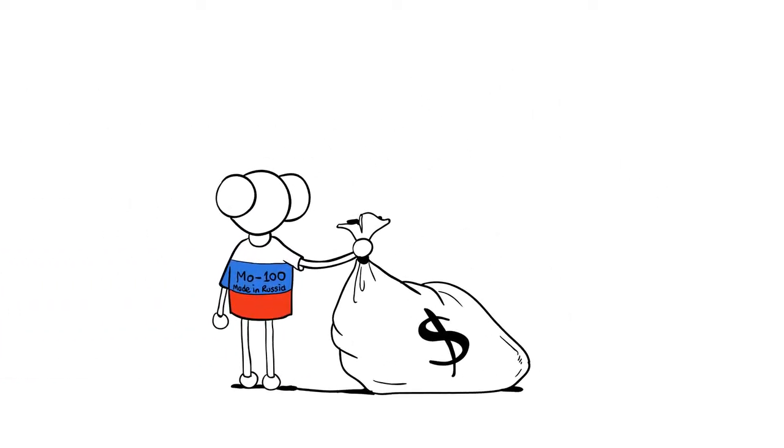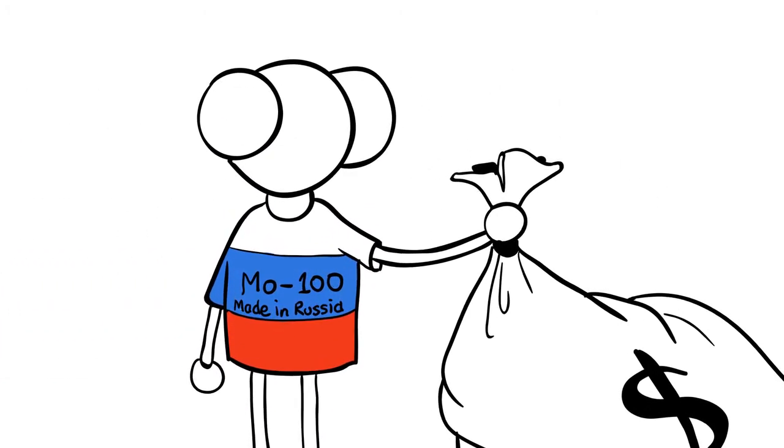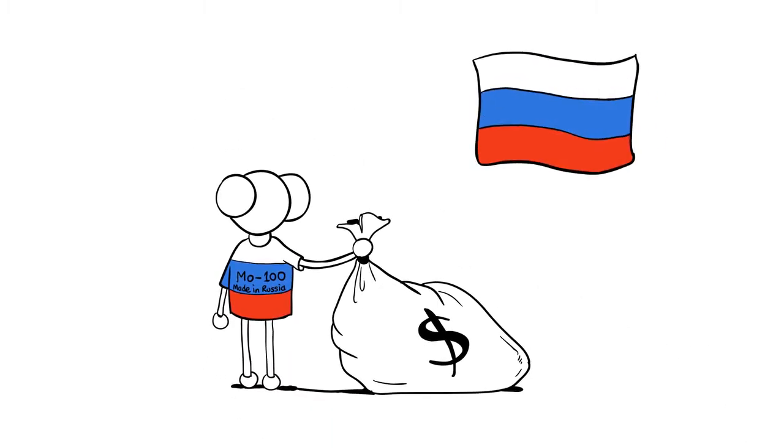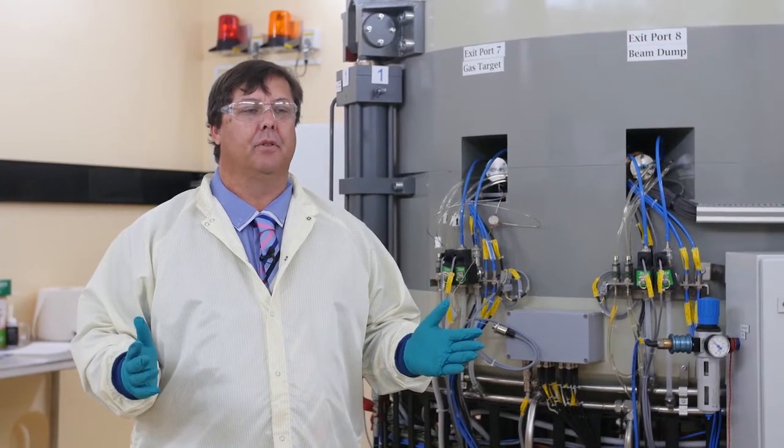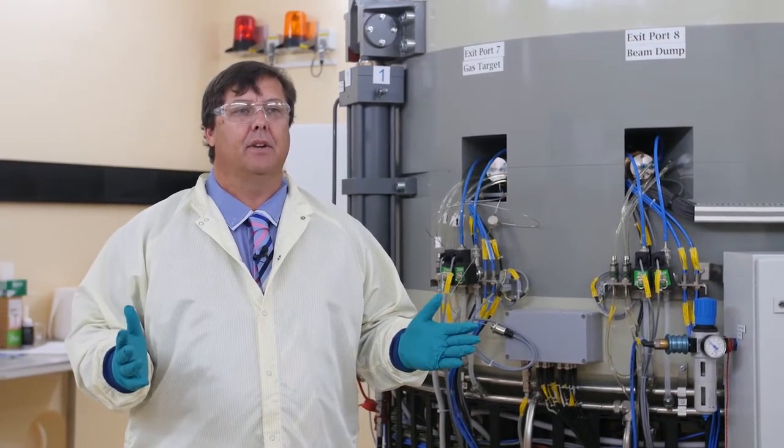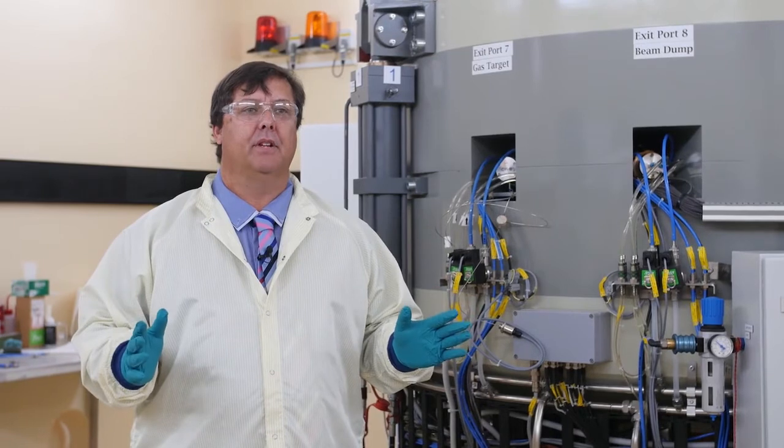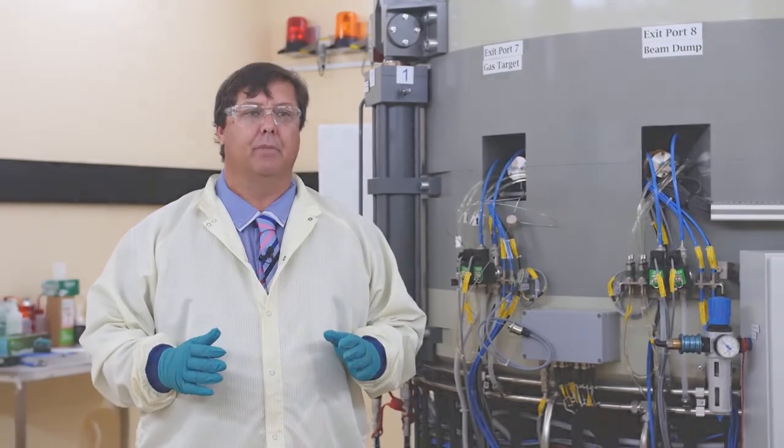And finally, cyclotrons rely on highly enriched molybdenum-100 targets, which are expensive and currently only produced in Russia. I really like the idea of technetium-99M production in a cyclotron. I think it will be part of the landscape one day, but it won't replace the reactor. And at the moment, it's not even close to a suitable supplement.